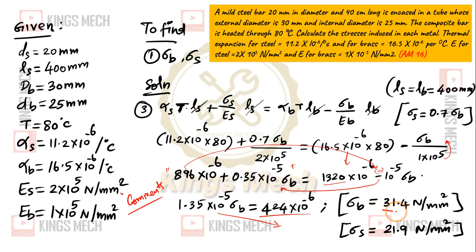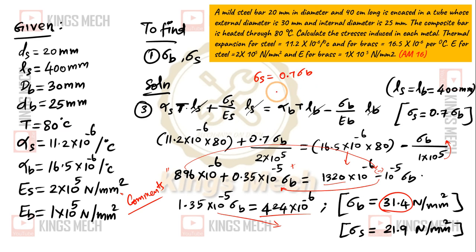We will get sigma B equal to 31.4 Newton per mm squared. And the value we already know — sigma S is equal to 0.7 sigma B, so 0.7 into 31.4.